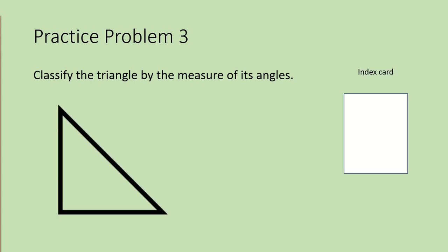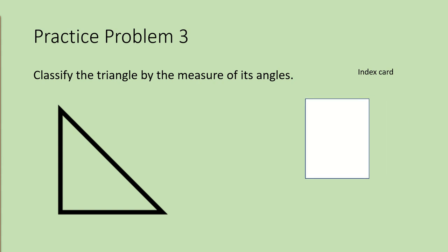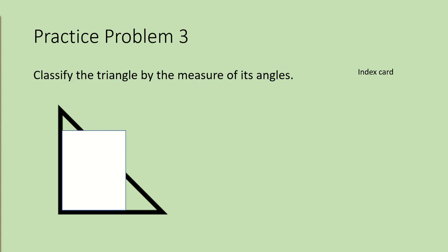Let's look at one more problem. This problem shows a triangle with no measurements. You will need to use the index card to help you classify this triangle. Notice how one of the corners of the index card fits perfectly in one of the angles of the triangle. Since we have one angle that measures 90 degrees, this is classified as a right triangle.